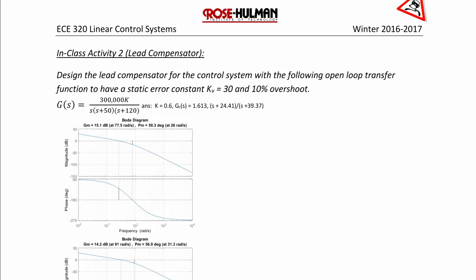Let's start the final activity for today's lecture. Design the lead compensator for the control system with the following open loop transfer function to have a static error constant KV equals 30 and 10% overshoot. G of S is equal to 300,000 K over S times S plus 50 times S plus 120.